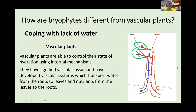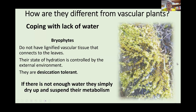Another major difference between bryophytes and vascular plants is how they cope with lack of water. Vascular plants control their hydration state using internal mechanisms — xylem and phloem — taking water up from the roots and transporting nutrients down. But bryophytes don't have a lignified vascular system connecting to the leaves. They have ways of transporting water, but they're very rudimentary — through capillary action. The way they deal with changes in environment and lack of water is by being desiccation tolerant: if there isn't enough water, they just dry up, suspend their metabolism, and wait for water to return.